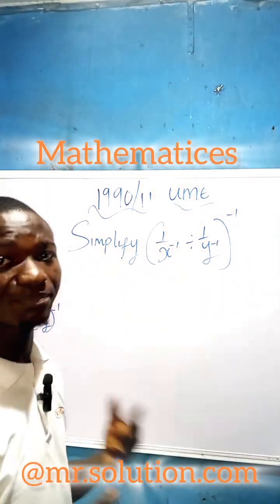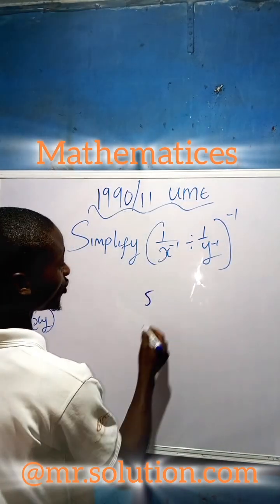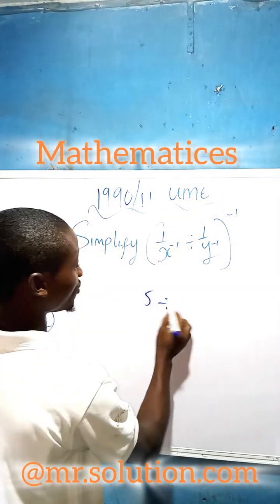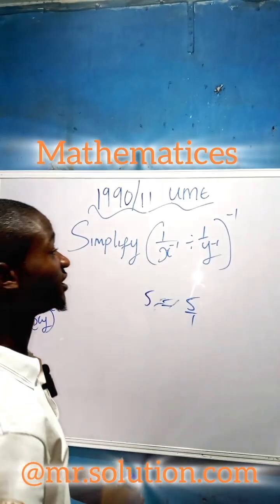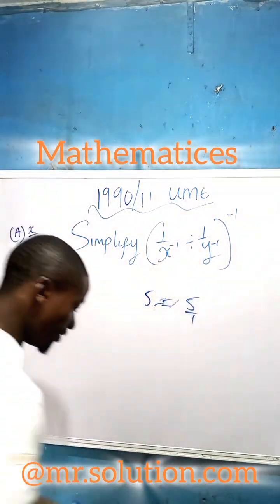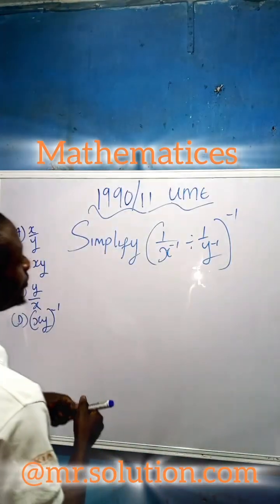In every number, you know there's always a base. For example, five is like five over one. Because of this, there is always an invisible 'over one' in every number.